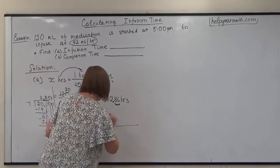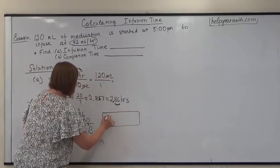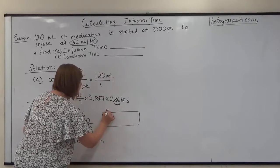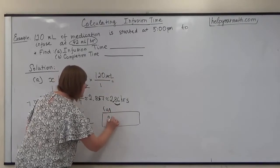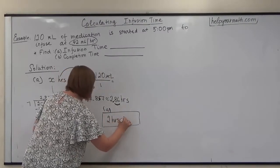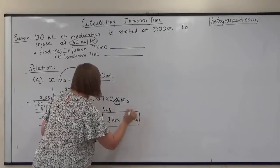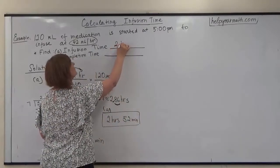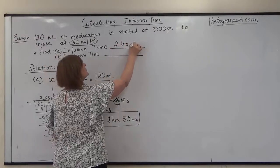So therefore we will say as a final answer that our infusion time for A will be 2 hours and 52 minutes. So let's put it here, 2 hours and 52 minutes.